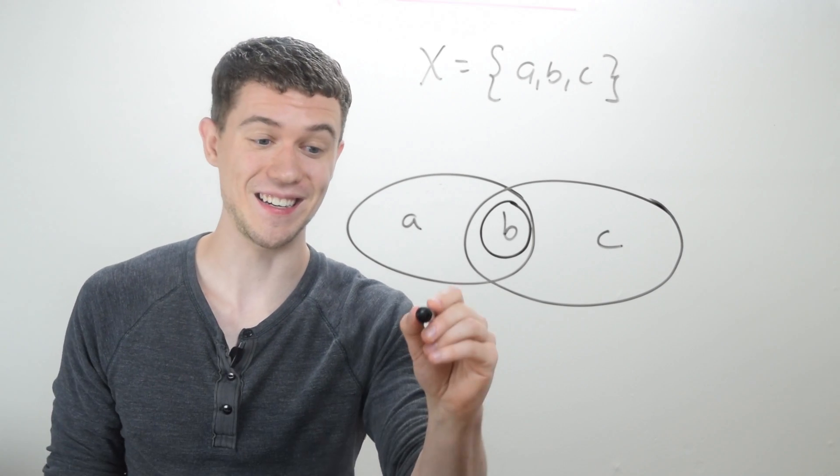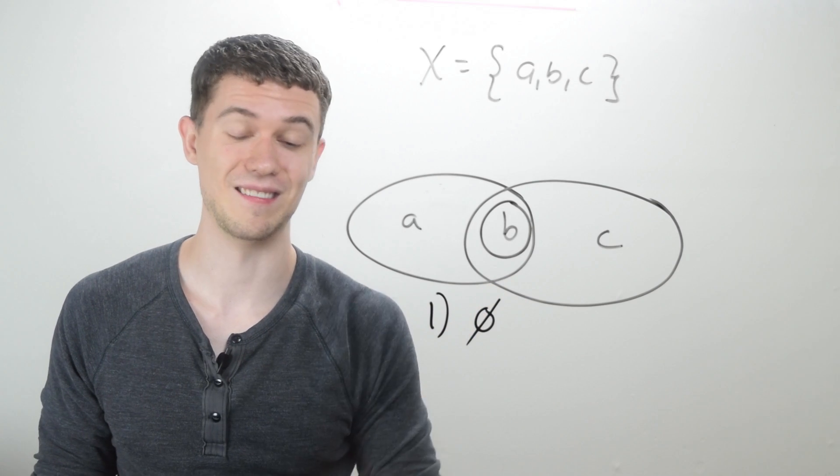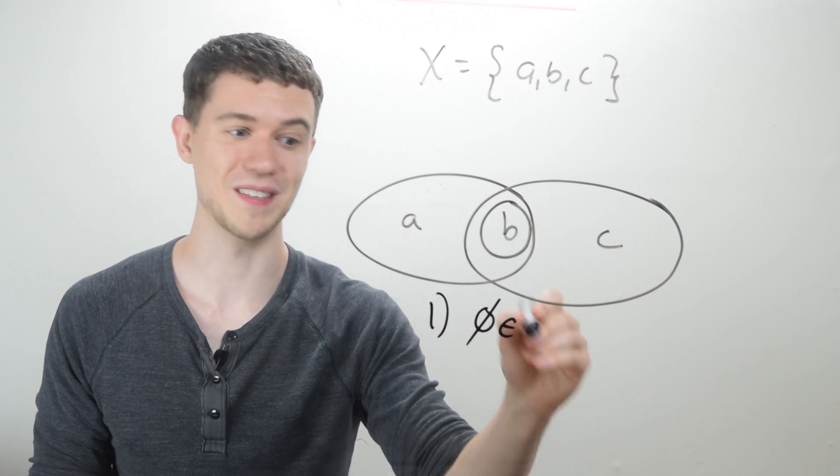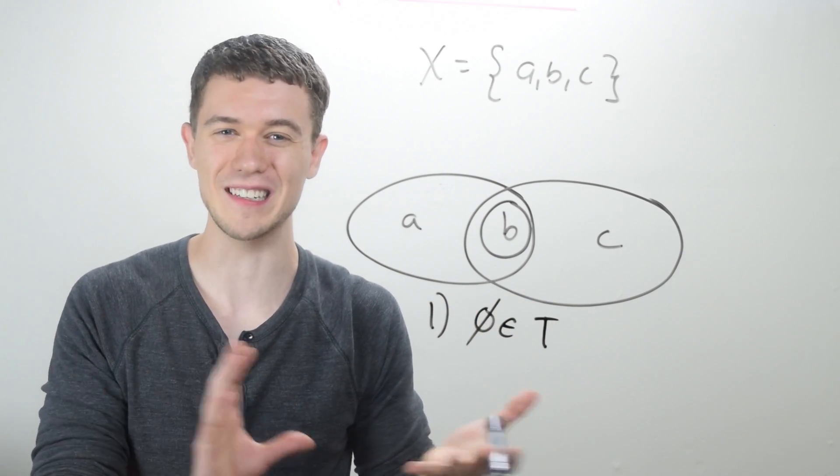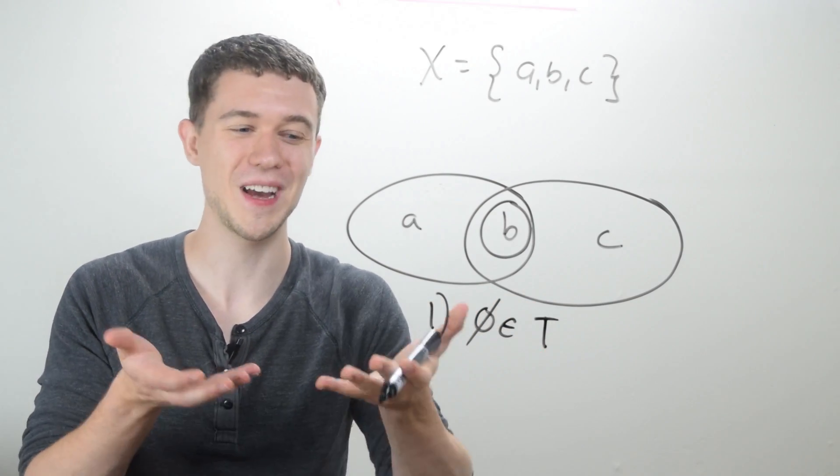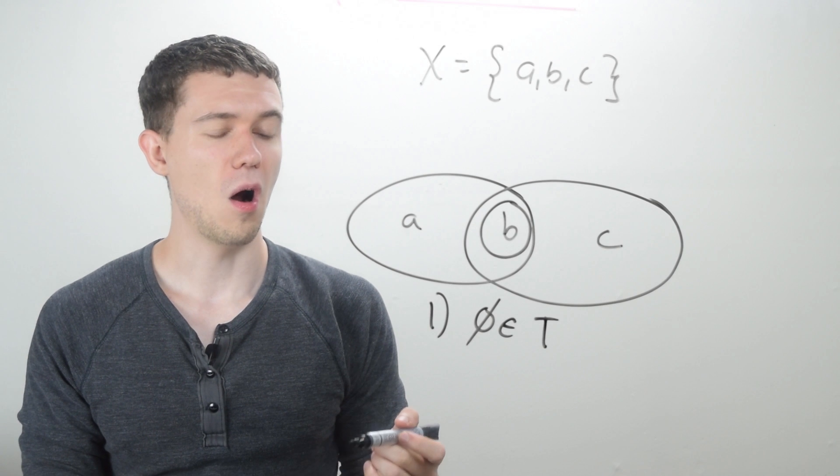Well, let's see. The empty set is in here, right? So I'll call these open sets T. It's in there because it's in there, we say vacuously, right? I can't draw it. So it's in there.